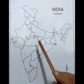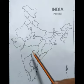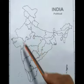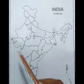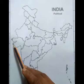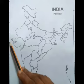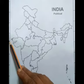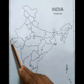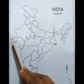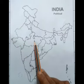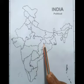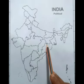This is the political map of India. You can see one imaginary line going through our country — that is the Tropic of Cancer. It covers Gujarat, Madhya Pradesh, and some part of Chhattisgarh.